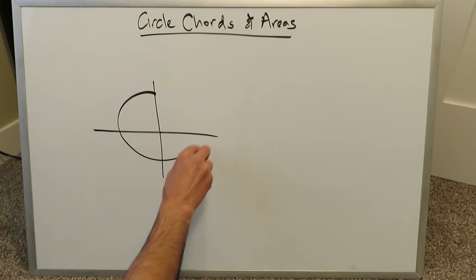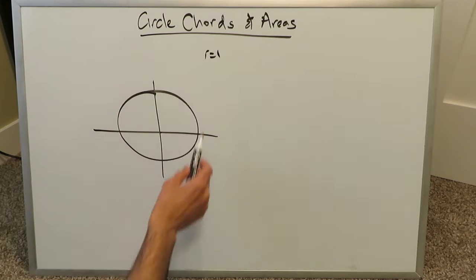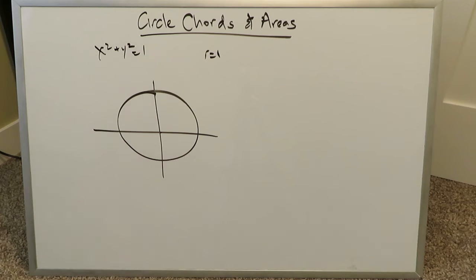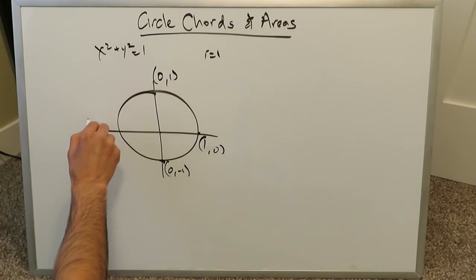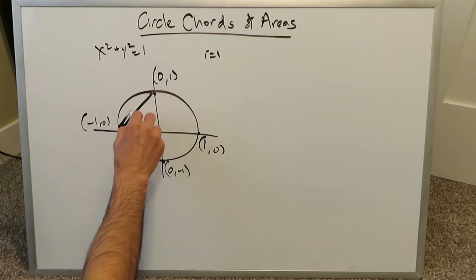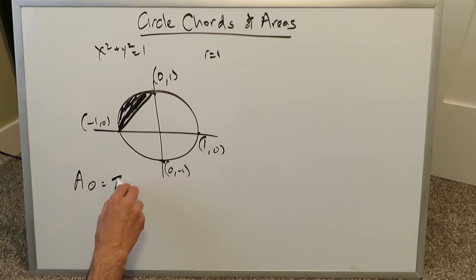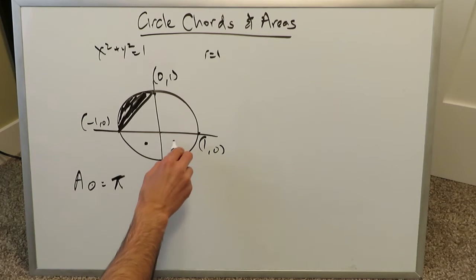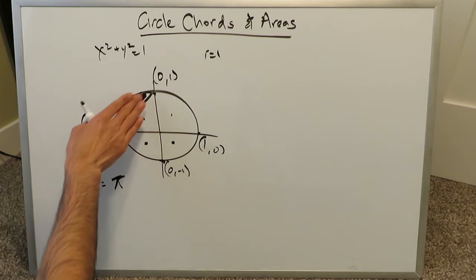We'll look at this first in a geometric way, then using integral calculus. If you have a circle with equation x squared plus y squared equals 1, you know the radius equals 1. At the quadrant points: zero comma minus one, one comma zero, zero comma one, and minus one comma zero. If we draw the similar representation as shown and look at this area over here — how can we do it using just geometry? The total circle area is pi r squared; with radius 1, the area of the entire circle is just pi. We need to find the shaded portion.